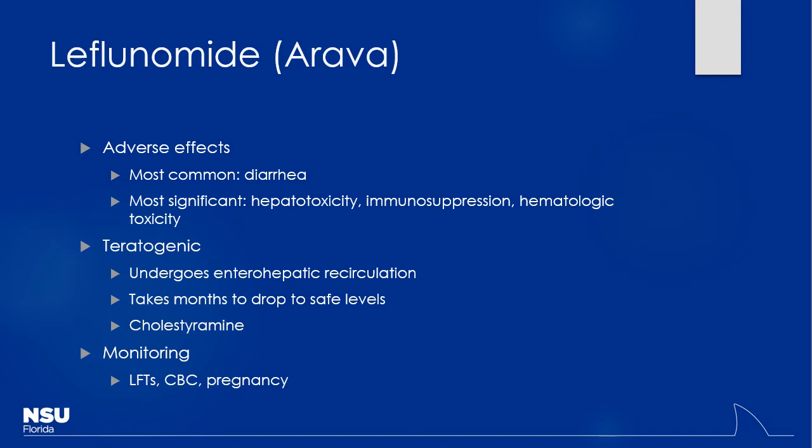One thing to note is that leflunomide undergoes enterohepatic recirculation — it gets secreted through the biliary tract and then reabsorbed, which extends the half-life significantly. In fact, it can take months for levels to get down to undetectable amounts. Who might that be a problem for? Since it decreases pyrimidine synthesis and inhibits DNA synthesis, it's not good for pregnant patients. If someone wants to get pregnant, they may have to wait months — that might not fit their schedule.